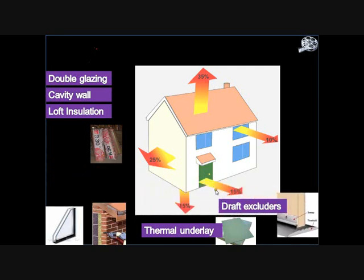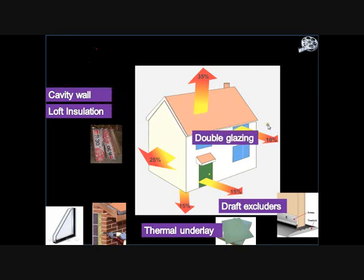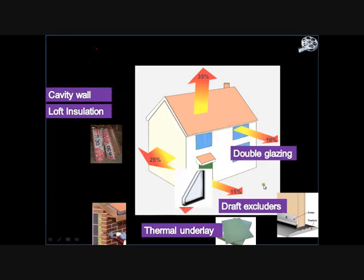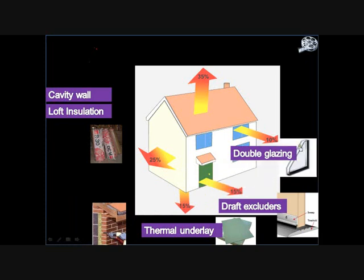We can put draft excluders around the doors to stop convection, because often cold air in particular will come in through the floor as the hot air is rising out through the house, drawing cold air in from outside. For the windows, most windows these days are double glazed — again this is to do with trapping the air. It's not really the two layers of glass that's important, it's the air trapped in between them. If you don't let the air move, it can't convect and carry the heat out.